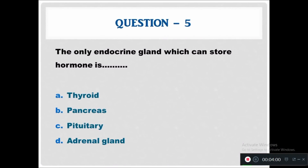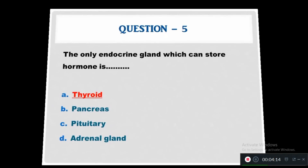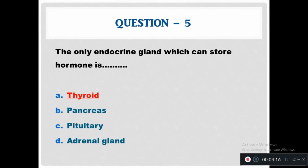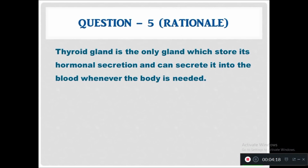Question 5: The only endocrine gland which can store a hormone is — Option A: thyroid. Option B: pancreas. Option C: pituitary. Option D: adrenal gland. The answer is the thyroid gland. The rationale: the thyroid gland is the only gland which stores its hormone secretion and can secrete it into the blood whenever the body needs it.